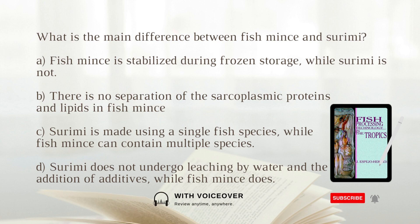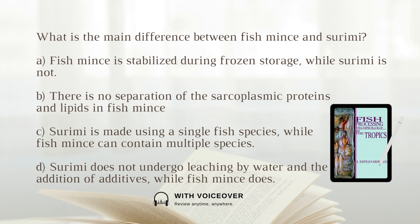What is the main difference between fish mince and surimi? A. Fish mince is stabilized during frozen storage while surimi is not. B. There is no separation of the sarcoplasmic proteins and lipids in fish mince. C. Surimi is made using a single fish species while fish mince can contain multiple species. D. Surimi does not undergo leaching by water and the addition of additives while fish mince does. Answer: B. There is no separation of the sarcoplasmic proteins and lipids in fish mince. The sarcoplasmic proteins include albumin, myoglobin, and enzymes.